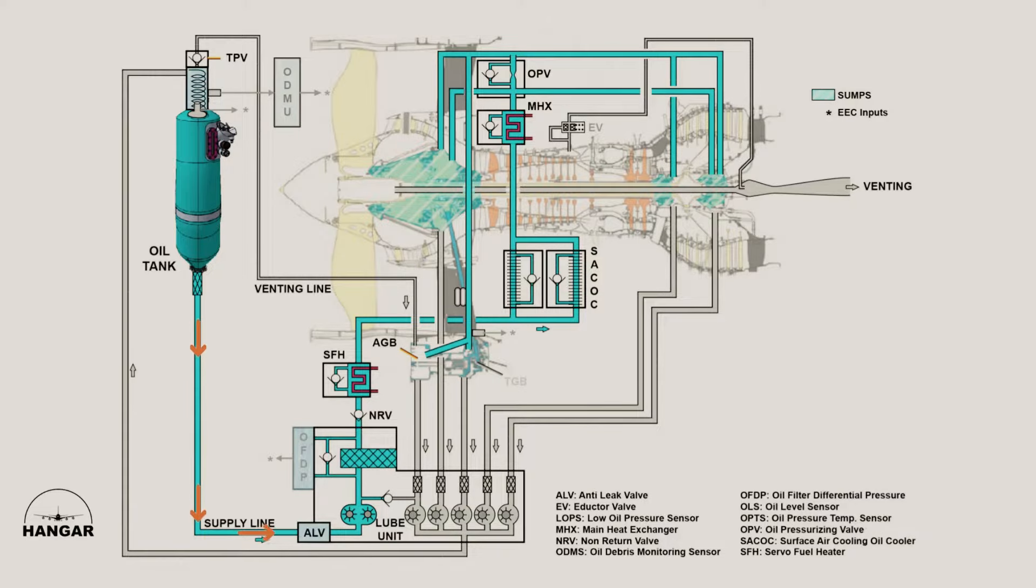Oil flows from the pressurized oil tank to the dual lube pump in the lubrication unit. The inlet on the lubrication unit is fitted with an anti-leakage valve, ALV, to avoid oil to flow by gravity from the tank to the lube unit and end up in the accessory gearbox, AGB.